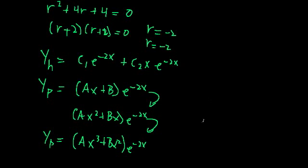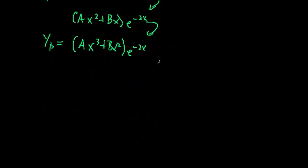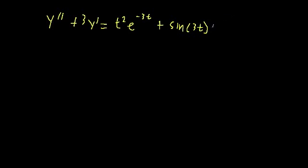Instead, we're going to move on to an even crazier example. So let's take a look at this differential equation. We're going to look at the second derivative of y plus 3 times the first derivative. All of this is equal to t squared e to the negative 3t. Here we're apparently dealing with time now instead of x. Plus sine of 3t plus 2t cubed plus 1. So we have a slightly daunting non-homogeneous side.